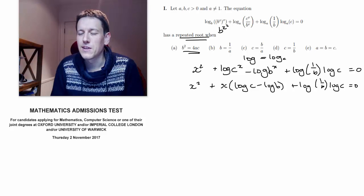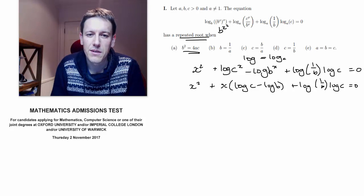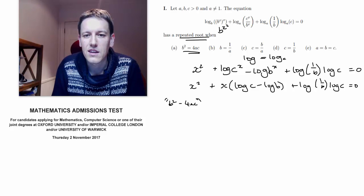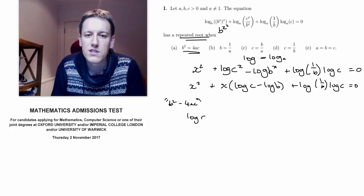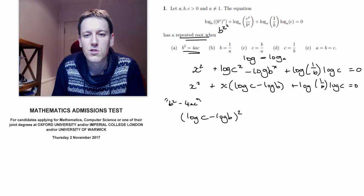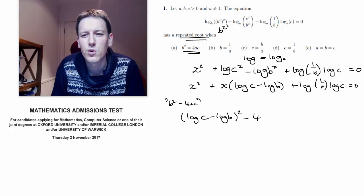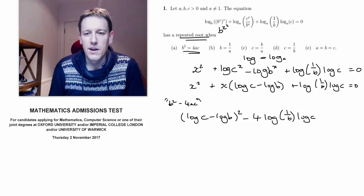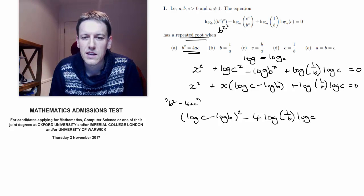But the b squared minus 4ac here from the quadratic is log c minus log b squared minus 4 times 1 times log 1 over b times log c. So if I have a look at this now...